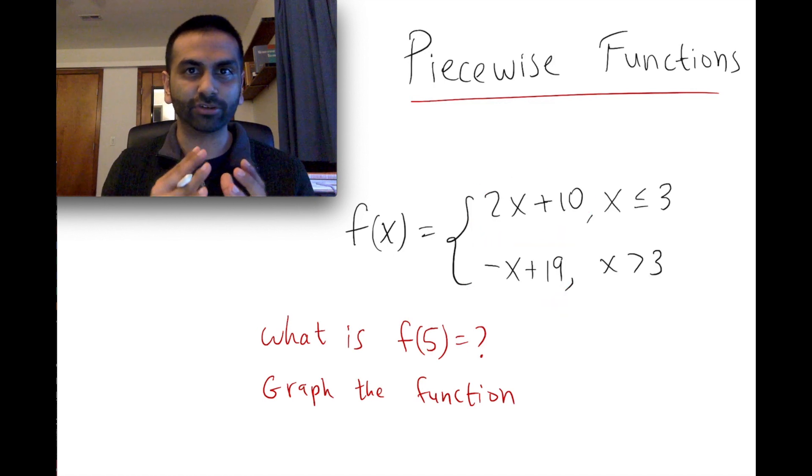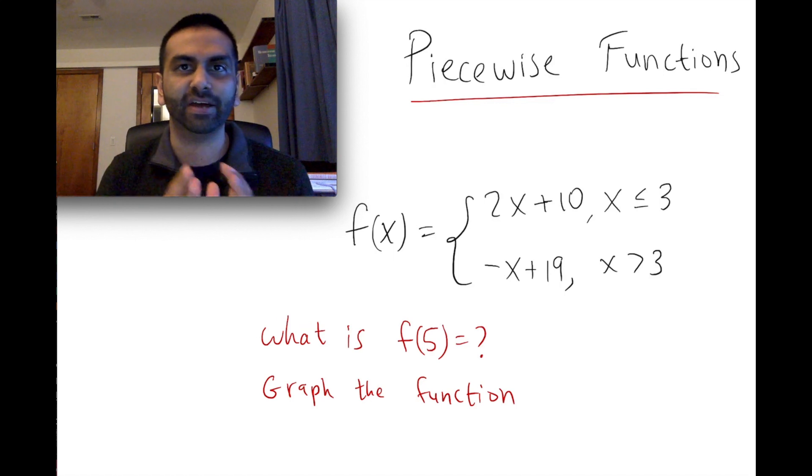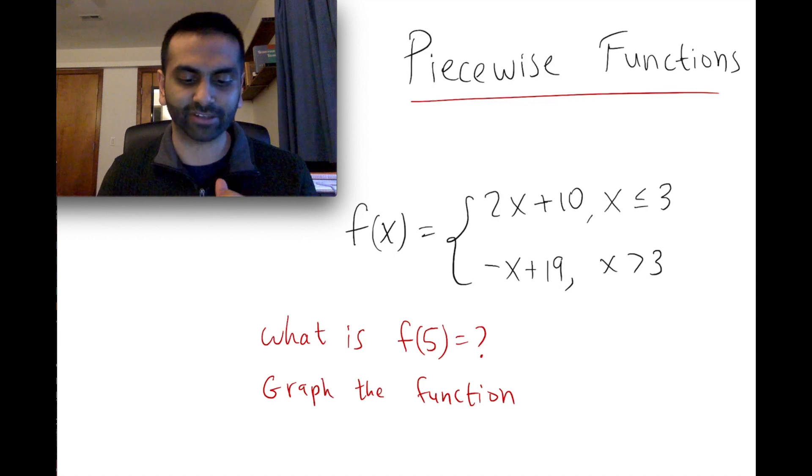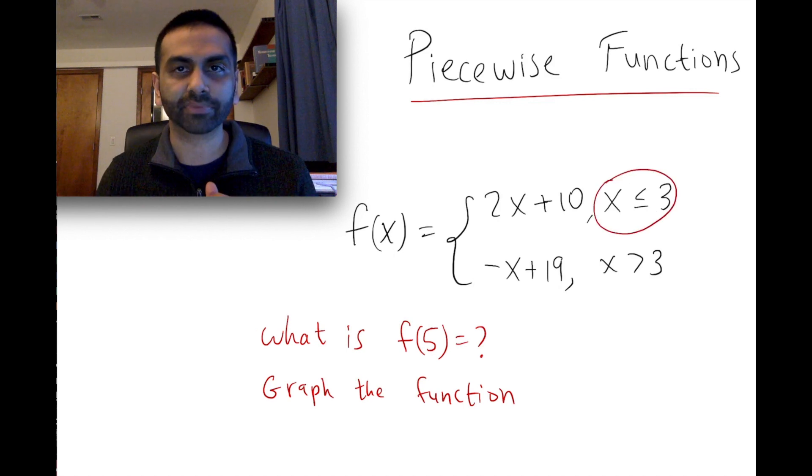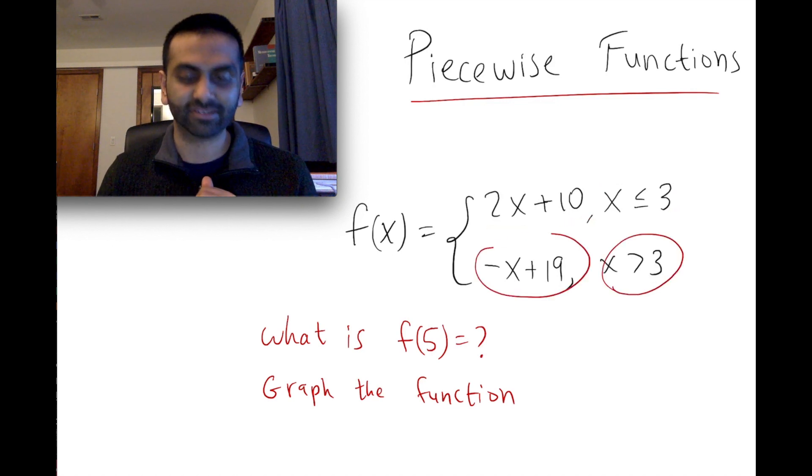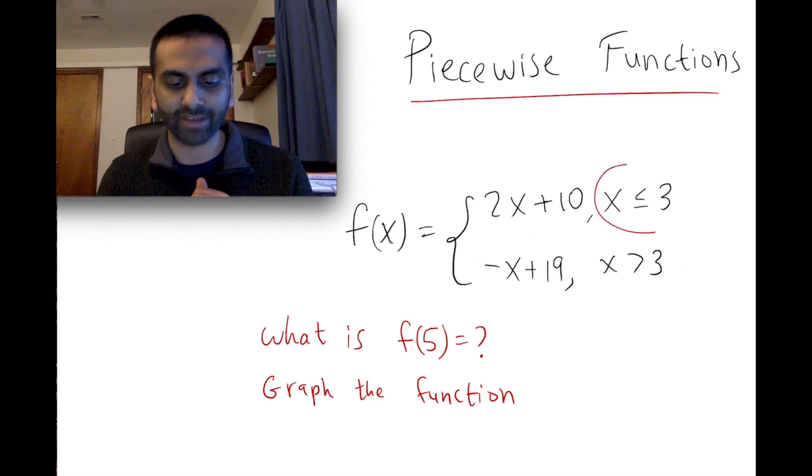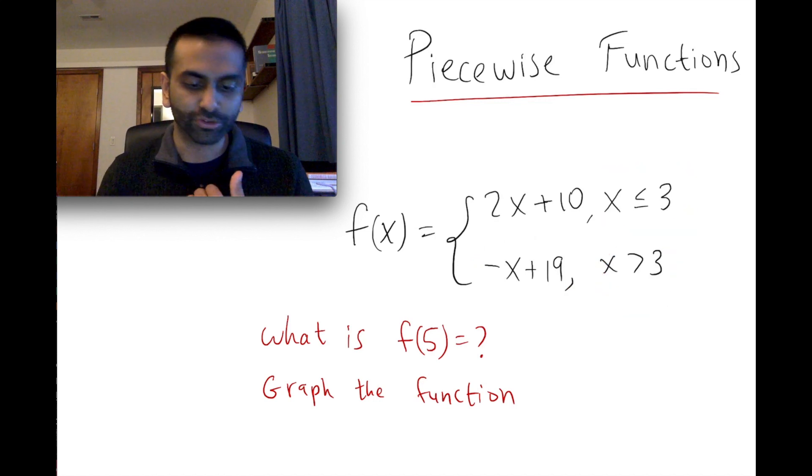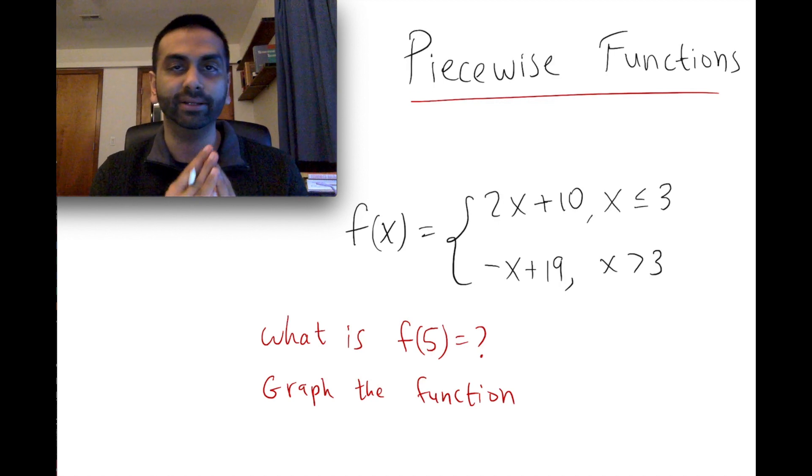It's looking like a different equation on different sets of x values. The name for the sets of x values are called domains. So on this domain where x is less than 3, this is the function we're going to graph. And on this other domain this is the function we're going to graph. These domains can't overlap with each other because otherwise you wouldn't know which equation applies because only one can apply.